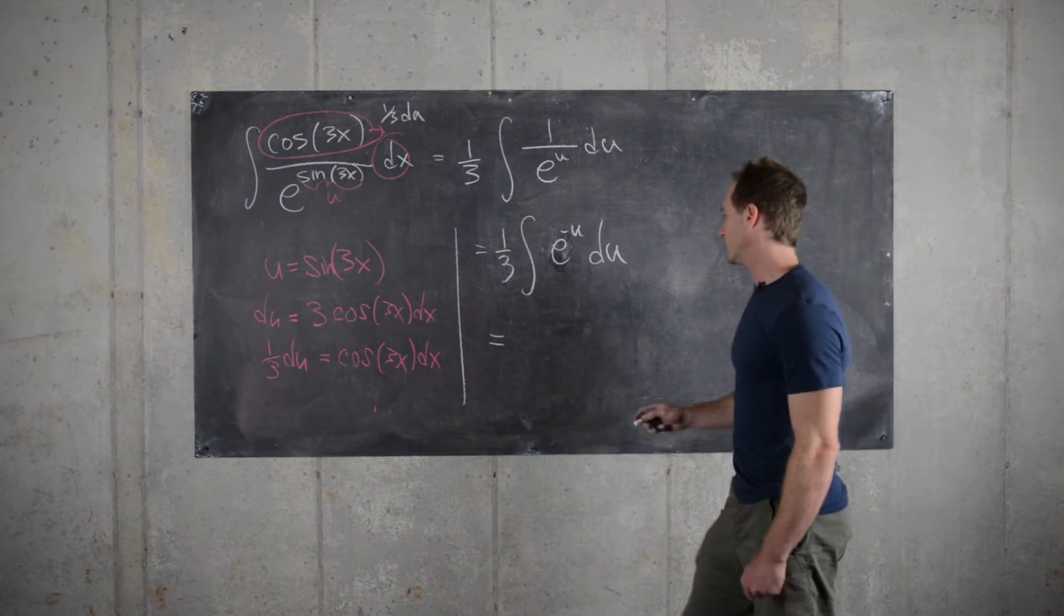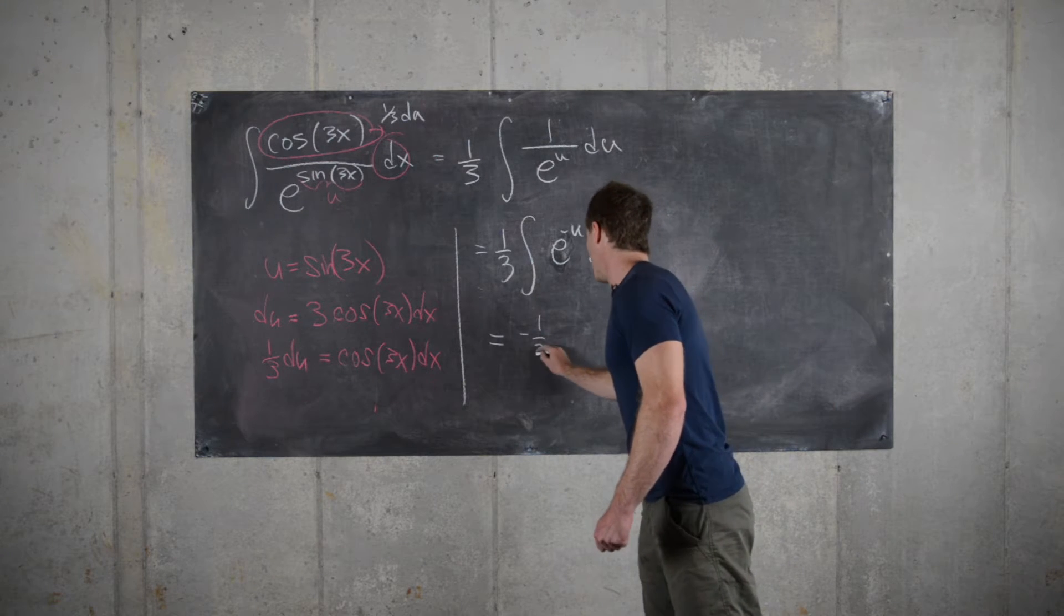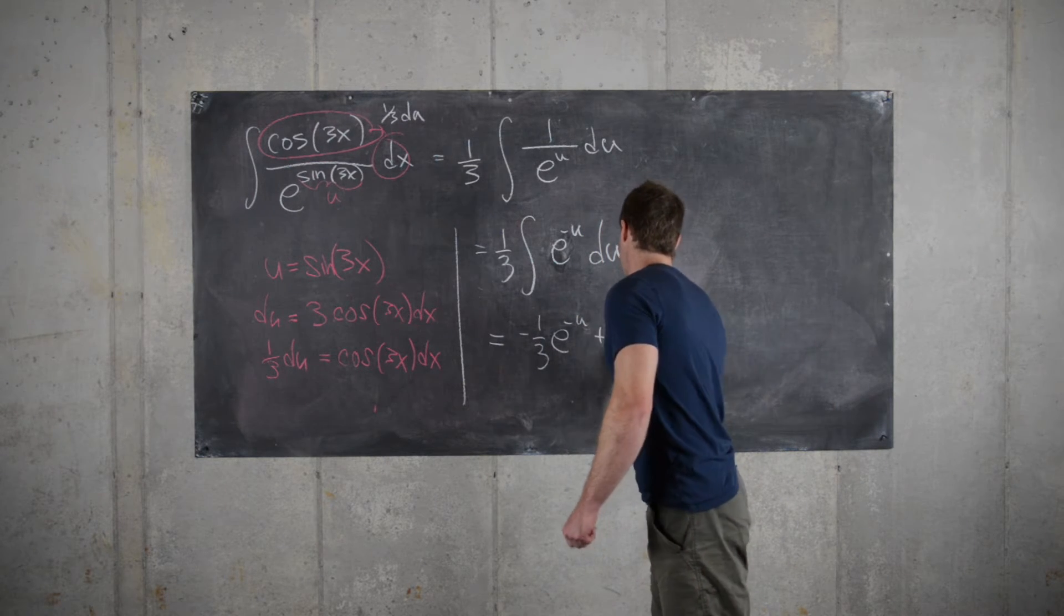And then taking the antiderivative of this, we'll get minus 1 third e to the minus u plus a constant.